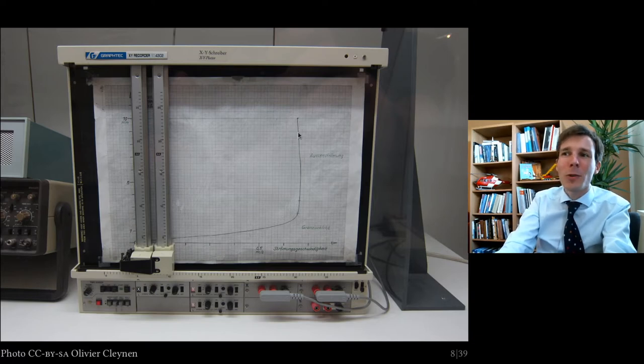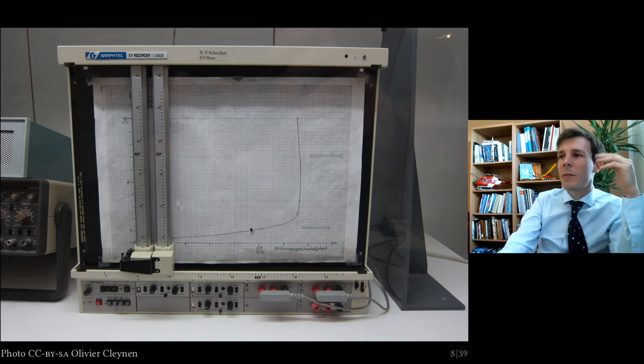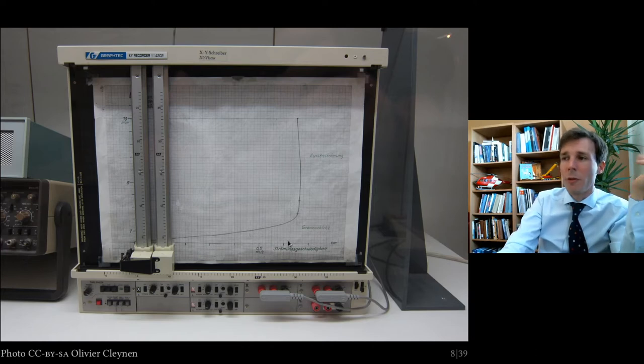And you plot this as a graph on this lovely analog graphic XY recorder 4302. Then you're going to see the velocity is mostly constant, far away from the wall. But as you come close to zero, very close to the wall, you always tend to zero. And this zone here where the velocity is low and decreases from 99% of the mainstream value down to zero, the zone is called, in general, the boundary layer.